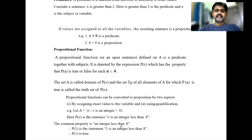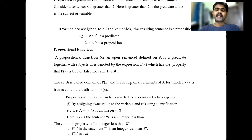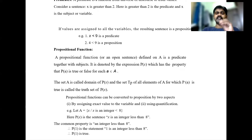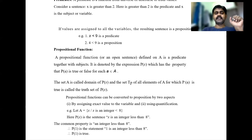The common property is 'integer less than 8'. So p(n) means 'n is an integer less than 8'. If we give p(1): '1 is an integer less than 8' — true. p(2): '2 is an integer less than 8' — true. p(9) is false, p(8) is false because '8 less than 8' is false and '9 less than 8' is false. So p(0), p(1), p(2), p(3), p(4) up to p(7) will be true.